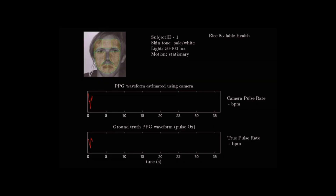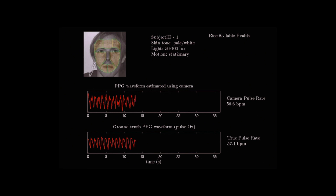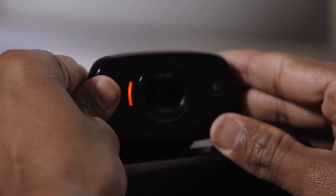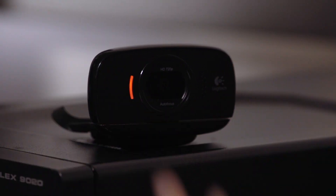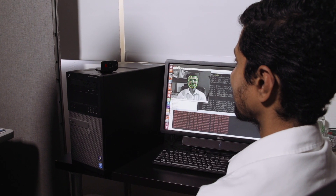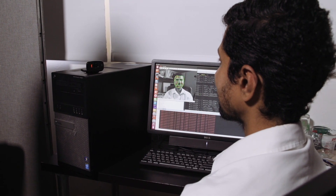The idea is that there are small intensity changes in your skin because the amount of blood changes underneath the skin surface. These small intensity changes we can actually reliably measure using an algorithm. The algorithm essentially takes multiple different pixels on your face and coherently combines the signals in these multiple pixels to enhance the vital sign signature.